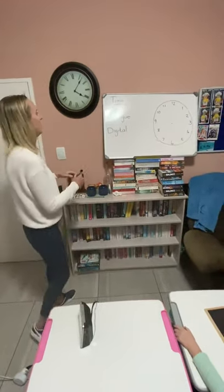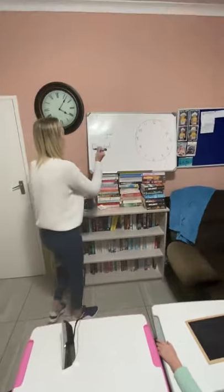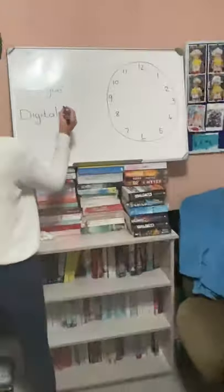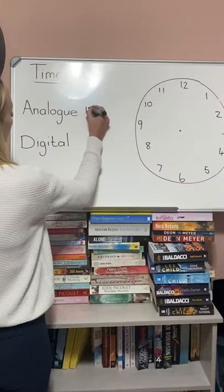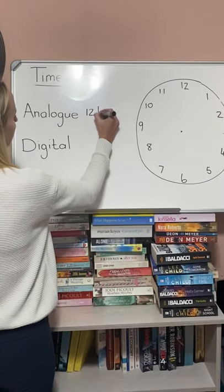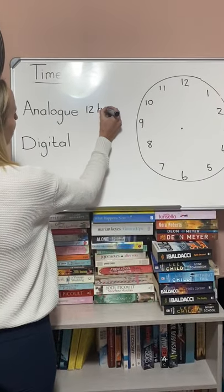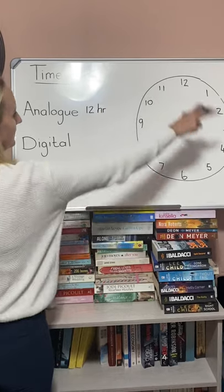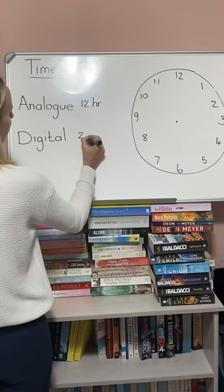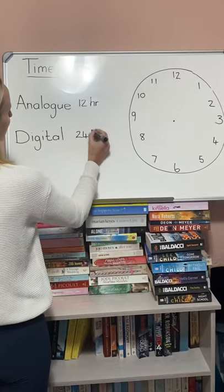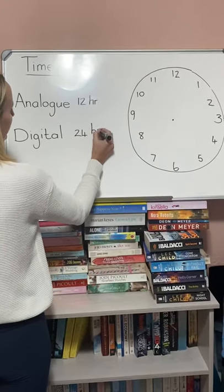So an analog clock works in twelve hourly — twelve hours to go around once. Digital does the full twenty-four hours.